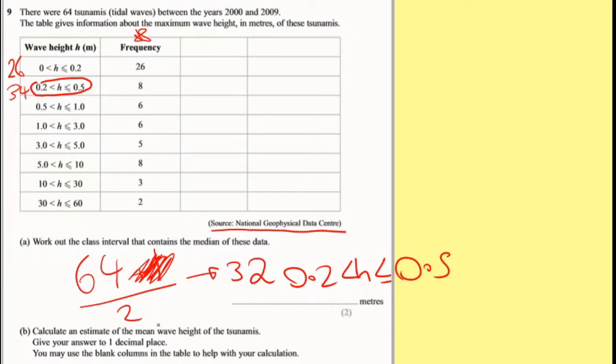Calculate an estimate for the mean wave height of the tsunamis. Give your answer to one decimal place. So we can use these columns, and I am going to use these columns and show your working out. Because in a lot of these, you will not get any marks if you don't show your working out. So if you want to use your calculator to type in all the scores to check, that's fine, but you won't get any marks if you don't show your working out. So this one here, I'm actually going to put my midpoint, and this one here I'm actually going to times my midpoint by my frequency.